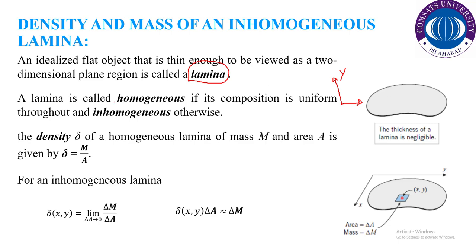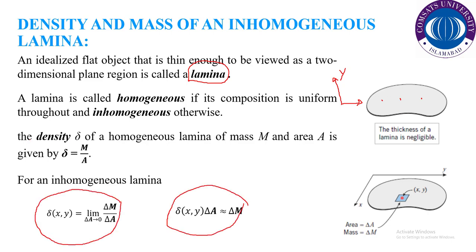A lamina is called homogeneous if its composition is uniform — meaning at every point, density and basic properties remain constant. Then we call this object a uniform object. Otherwise the object will be named as an inhomogeneous lamina. Density is basically defined as mass per unit area. Here we will use the symbol delta (δ) to represent the density, M for mass, and A for area.